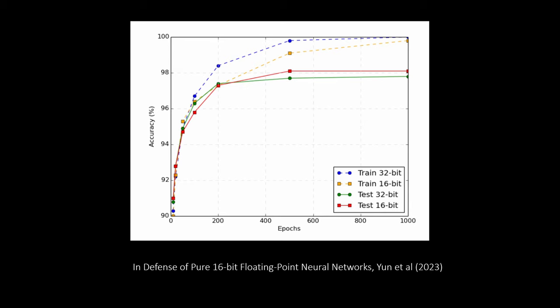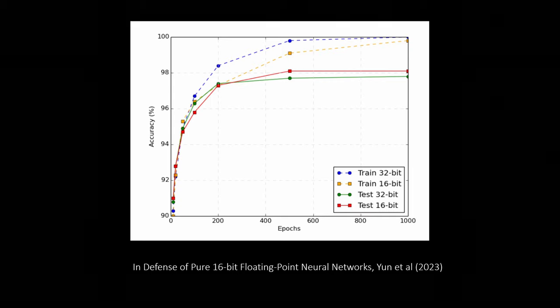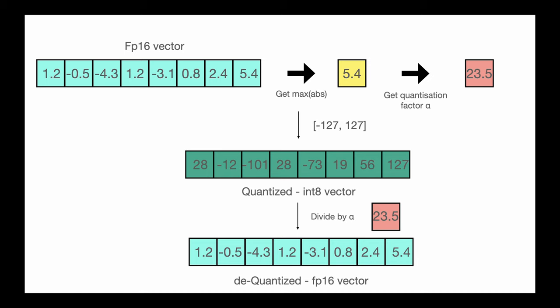Now, what about going even lower than half precision? A lot of papers have been reported that very low levels of precision don't really work out of the box. There is, however, a trend to use quantization, which allows you to go very low, even only integers, and still maintain the model performance.